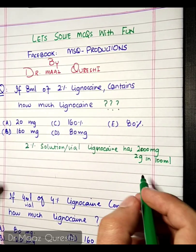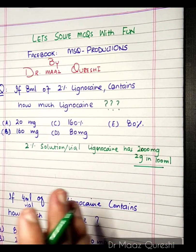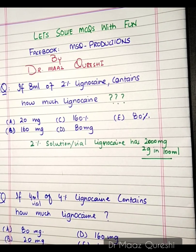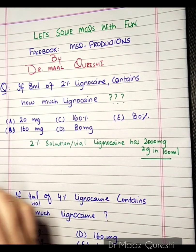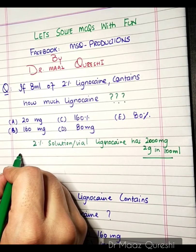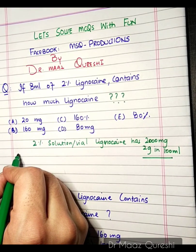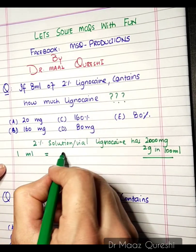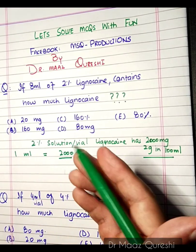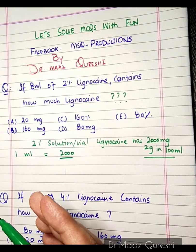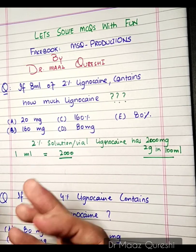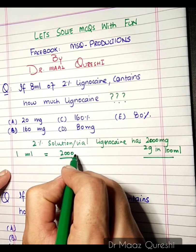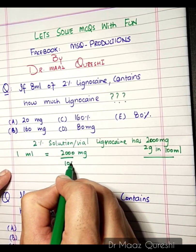If you have 100ml, you have a 2% solution. So if you have a 2% solution, you have 2,000mg — the rest is other ingredients. So how much lignocaine is present in 1ml? 1ml contains 2,000mg divided by 100ml.